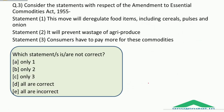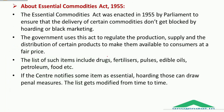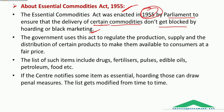Question 3 asks us to consider statements with respect to the amendment to the Essential Commodities Act of 1955 and identify the statement which is not correct. The Essential Commodities Act was enacted in 1955 by Parliament to ensure that the delivery of certain commodities does not get blocked by hoarding or black marketing. The government uses this act to regulate the production, supply and distribution of certain products to make them available to consumers at a fair price.